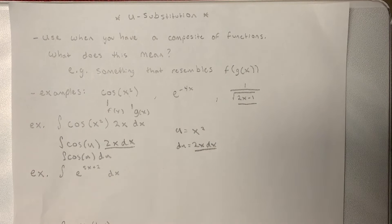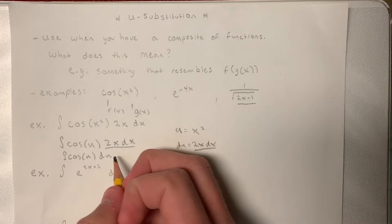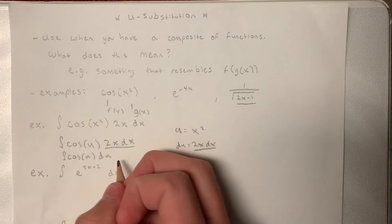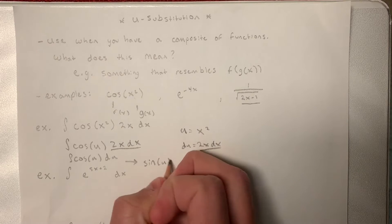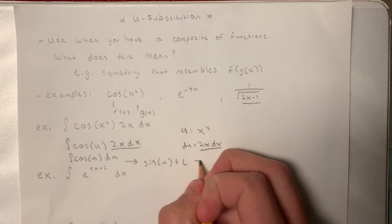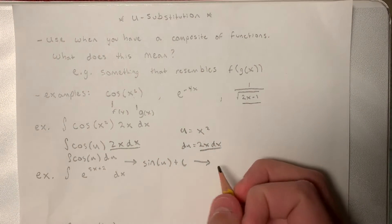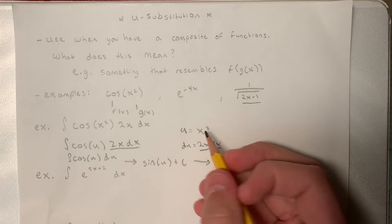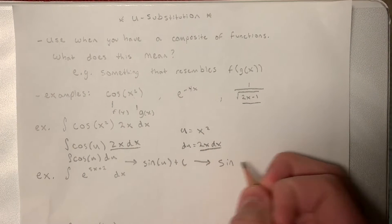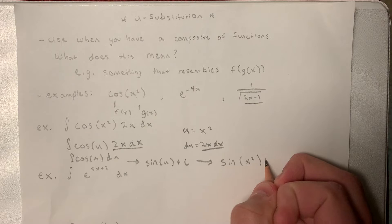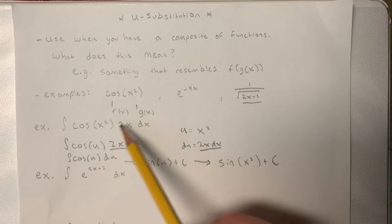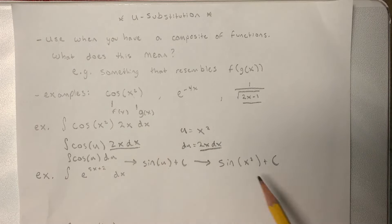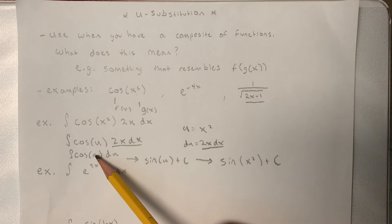So now this is just a basic integral that we already know how to solve. But we don't want to leave it in terms of u. So let's solve this. We have sine of u plus c. Changing back into our u as x squared, we have sine of x squared plus our constant of integration. So this took this somewhat difficult looking integral into something that we knew how to solve pretty easily.